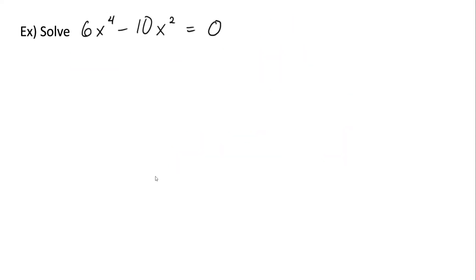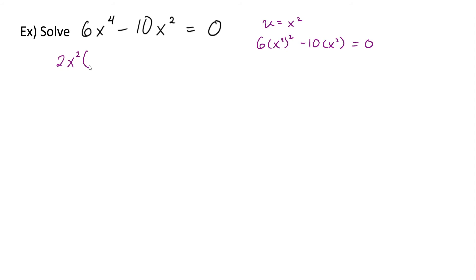Here's another example. This is also in quadratic form, where U would again equal x squared, because we can write this equation as six times x squared squared minus 10x squared equals zero. The easiest way to solve this one is by factoring. We can factor out a common factor of two x squared — we're doing this because there's no constant term. This becomes two x squared times three x squared minus five, and that product equals zero.